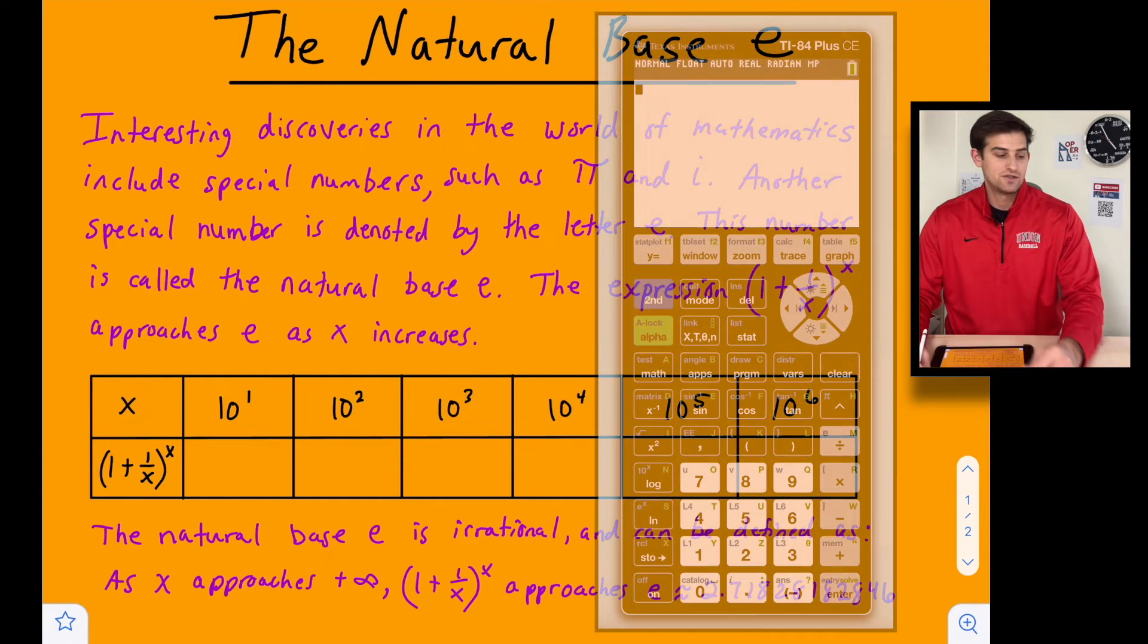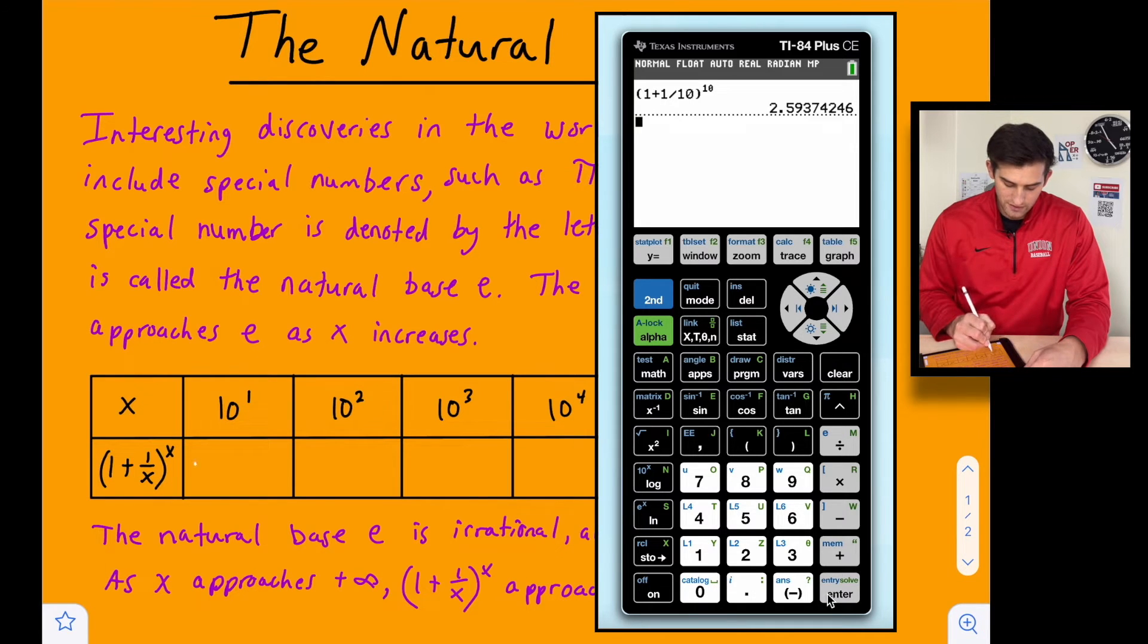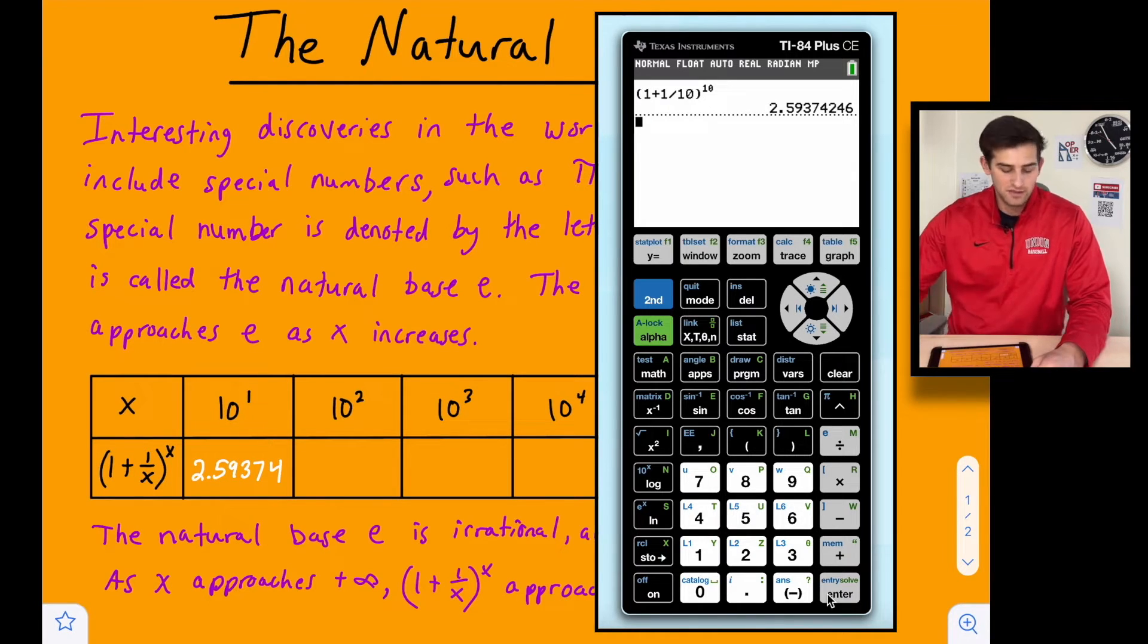So I'm going to bring my graphing calculator on the screen here, and we're going to go ahead and fill out this table of values. So for my first one, I'm going to open a parenthesis, and we're going to do 1 plus 1 divided by 10, close this parenthesis, and raise it to a power of 10. So here's our decimal that we get, and we're going to fill out our table: 2.59374. We'll do that to five decimal places there.